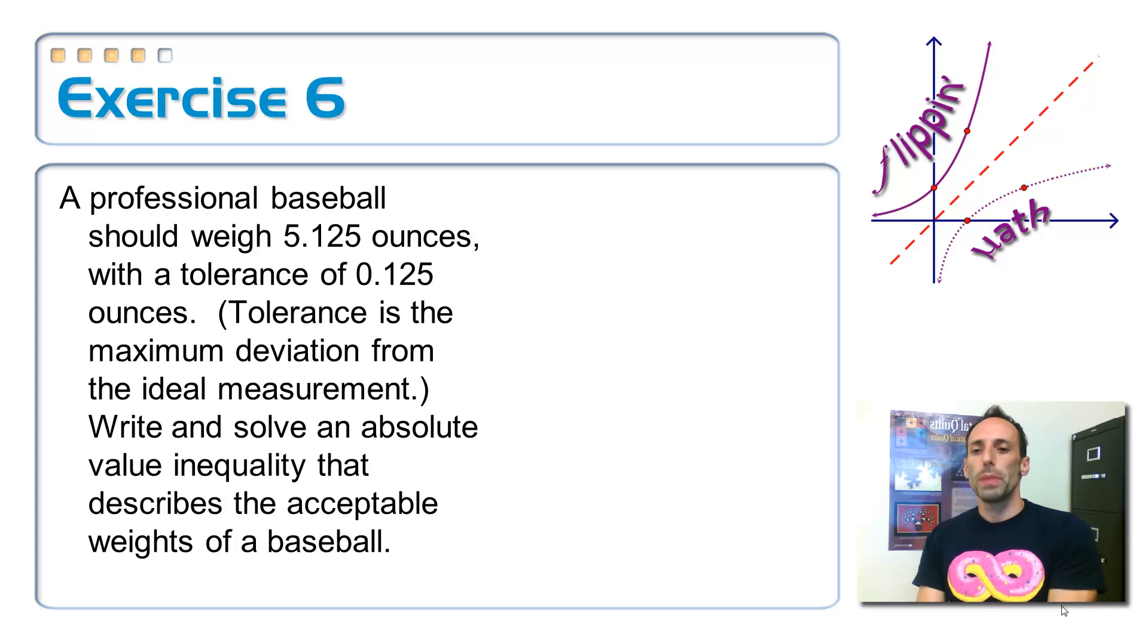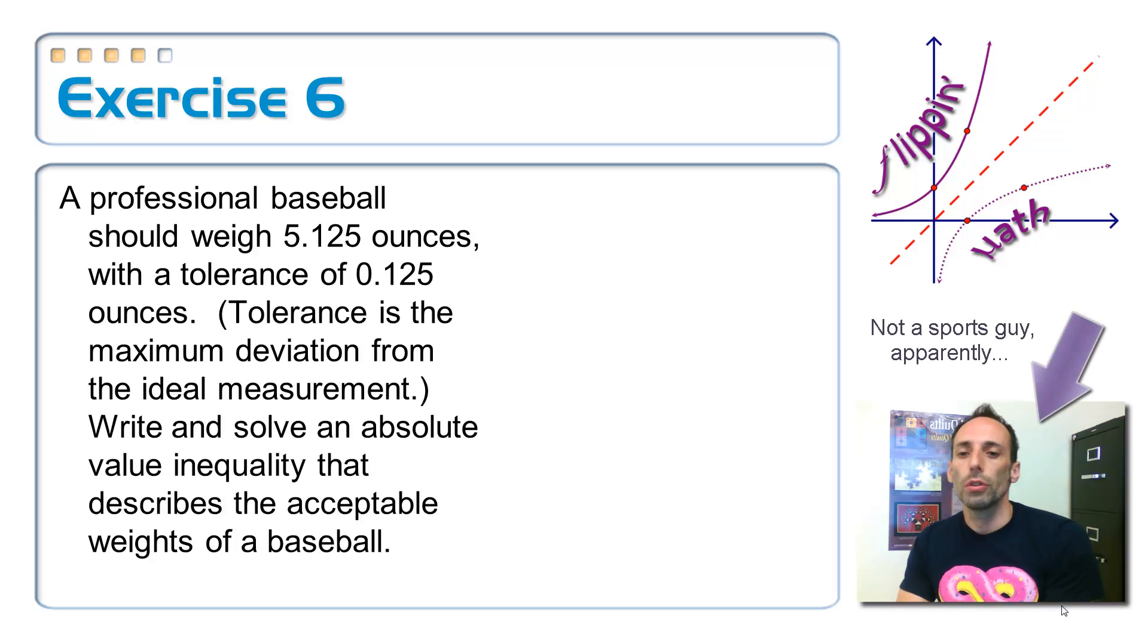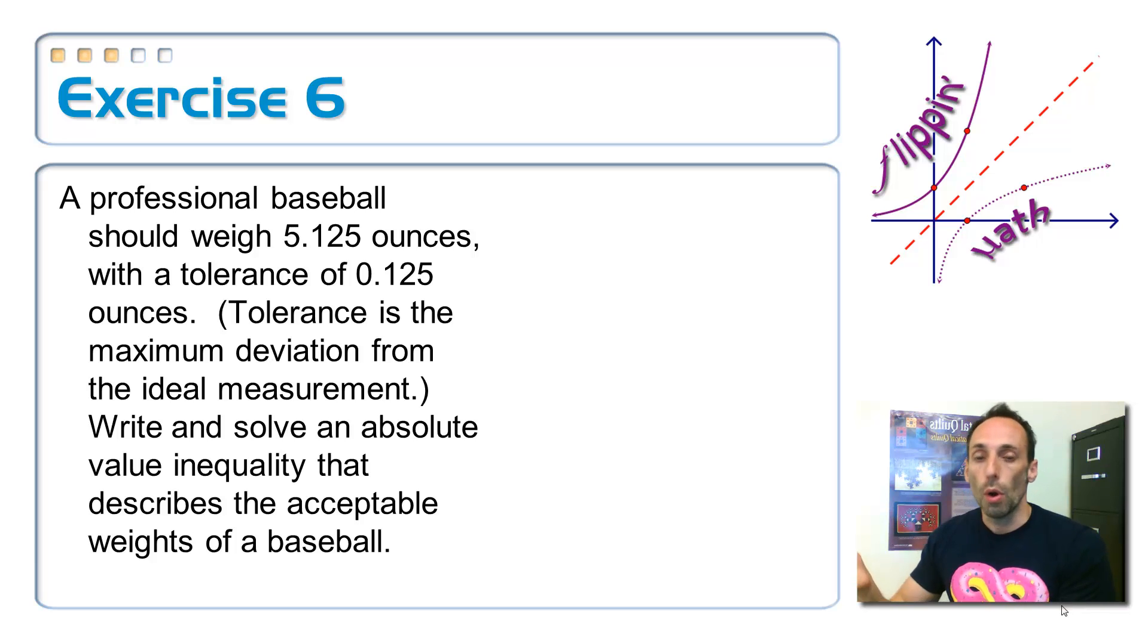Anyway, so a professional baseball should weigh 5.125 ounces, apparently, with a tolerance of 0.125 ounces. What a tolerance means is that, well, you can tolerate it, right? It's an error that you go, oh, it's okay. It could go up by that amount, or you could go down by that amount, and it's still going to be okay.